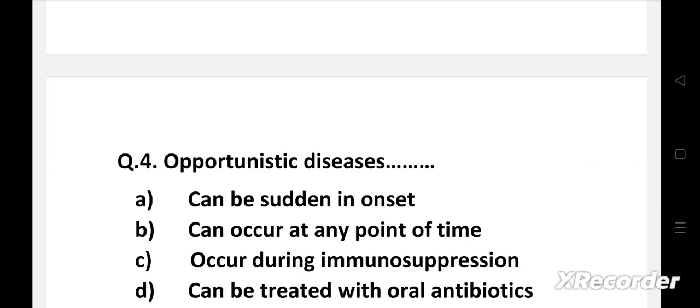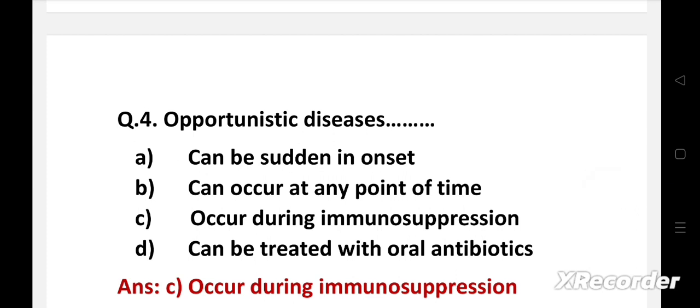Next question. Opportunistic diseases: Option A can be sudden in onset, B can occur at any point of time, C occur during immunosuppression, D can be treated with oral antibiotics. Right answer is Option C, occur during immunosuppression. Opportunistic infections are infections that are more often or more severe in people with weakened immune systems than in people with healthy immune systems. It may be caused by bacteria, fungi, viruses, and parasites.